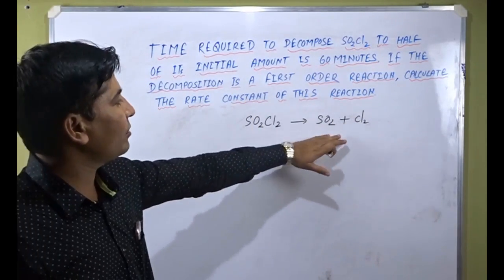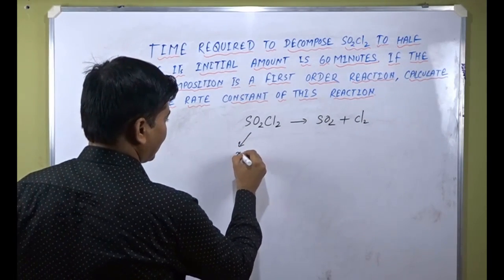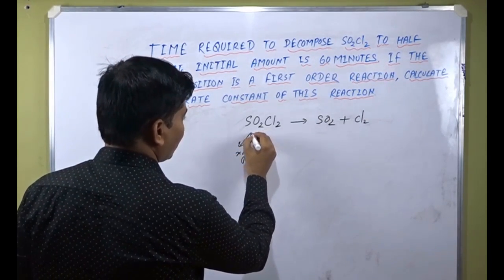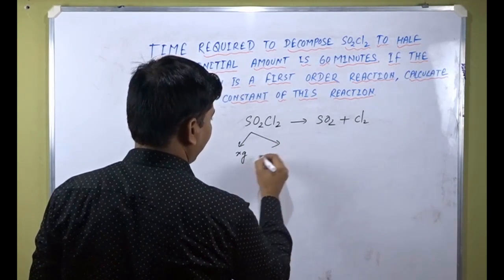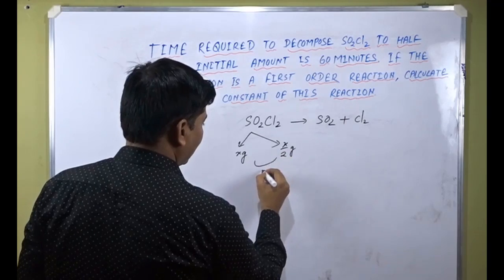This is a first order reaction. Its initial amount is, suppose X grams is given, and in 60 minutes it reduces to half of its amount, meaning X by 2 grams. Time taken is 60 minutes.